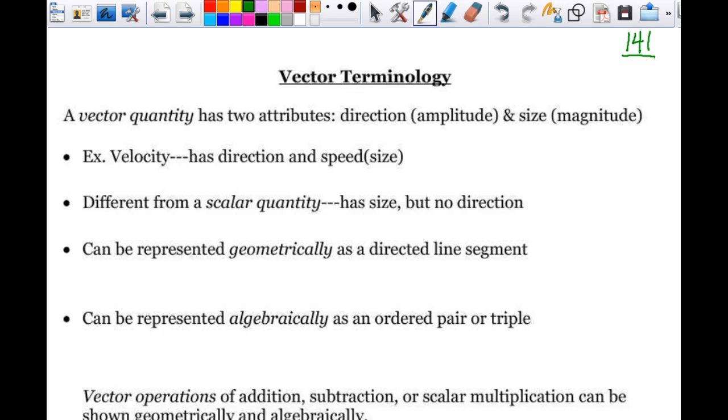So velocity has direction and speed, and speed can be a size. So it's not always like it's just five meters. It could be five miles per hour. That could be the size or the magnitude of the vector.